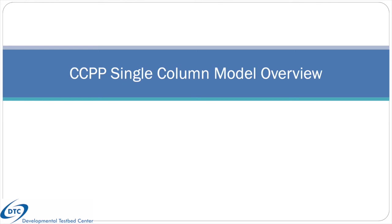This video is intended to provide an overview of the CCPP single-column model. It will cover topics such as the purpose of a single-column model, how the CCPP single-column model operates, the capabilities of the release code, overviews of the included cases, how it is tied to the UFS, and planned improvements.